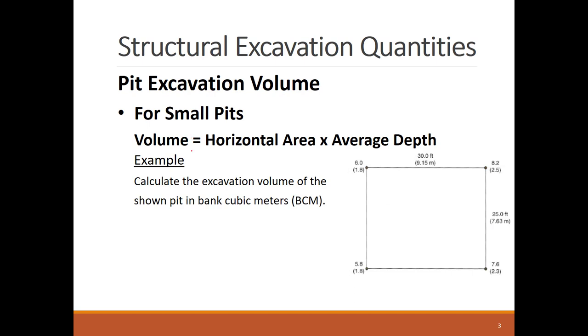As shown in the formula, the excavation volume equals the horizontal area of the pit multiplied by the average excavation depth. The shown pit has horizontal dimensions of 9.50 meters and 7.63 meters. You can see the excavation depths at the corners are provided, which were calculated as the difference between the existing and new grades.